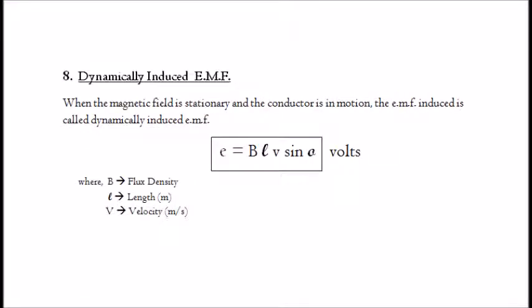8. Dynamically induced EMF. When the magnetic field is stationary and the conductor is in motion, the EMF induced is called dynamically induced EMF. It is given by: e equals B·l·v·sinθ, where B is the flux density, l is the length in meters, and v is the velocity in meters per second.